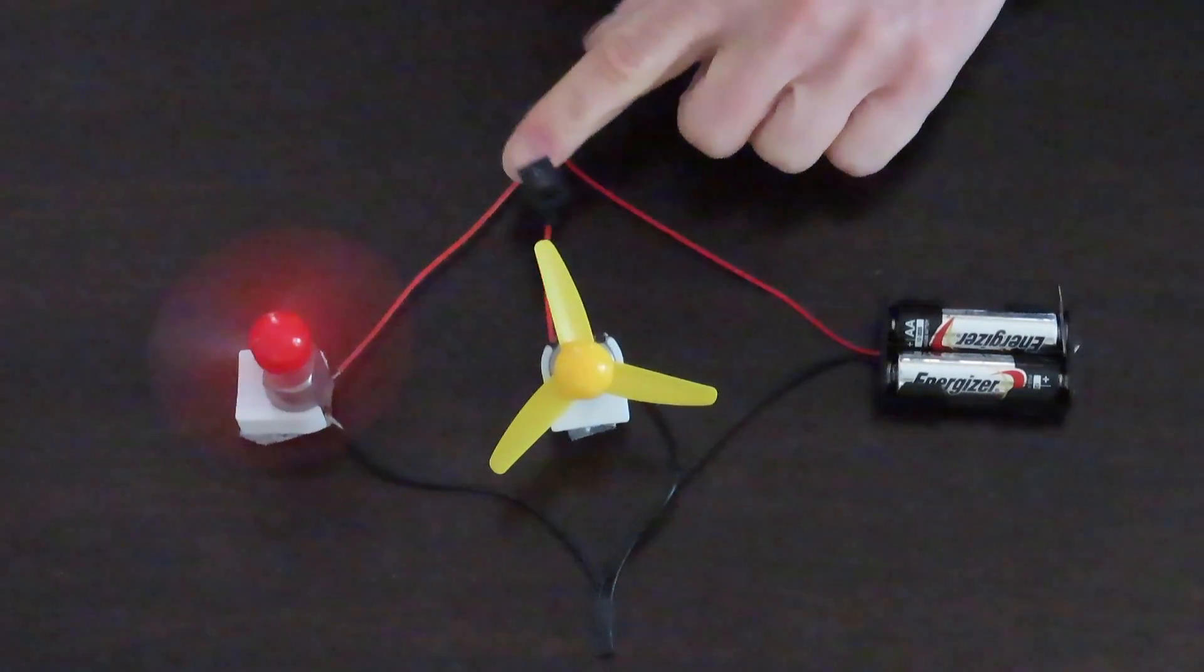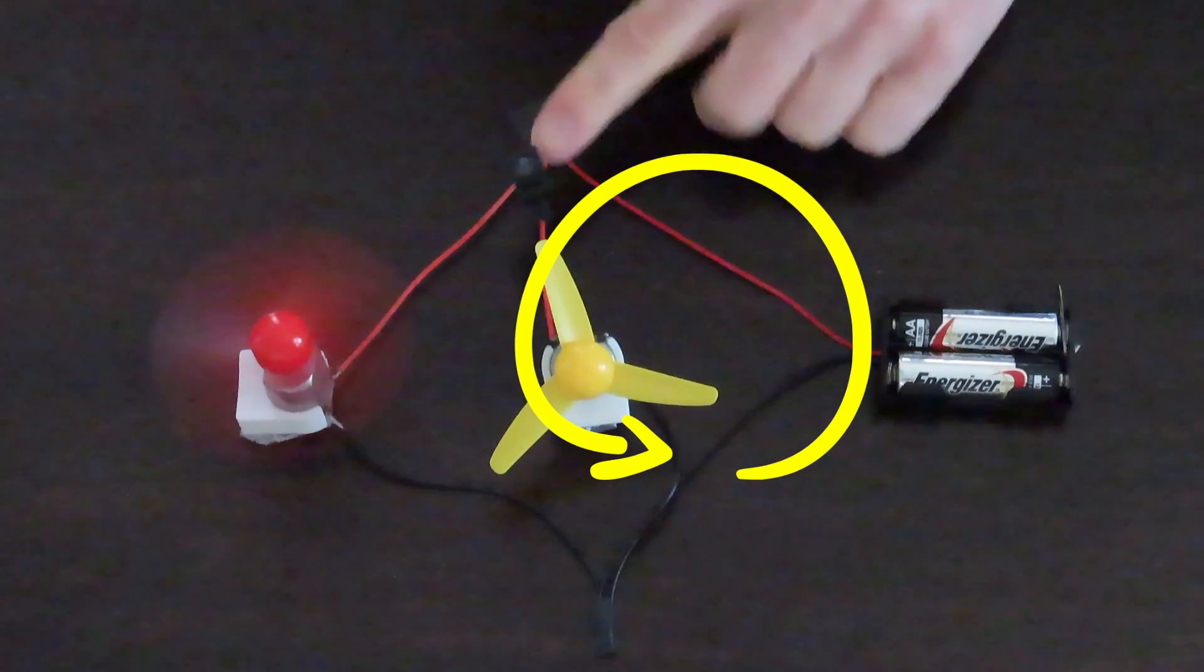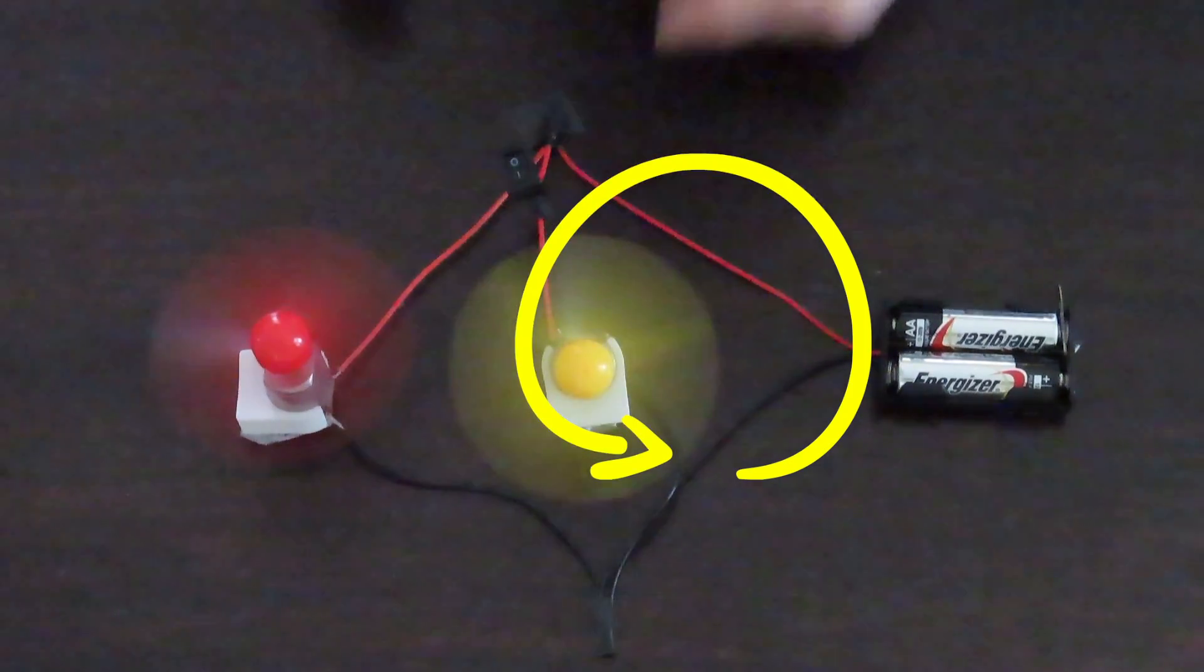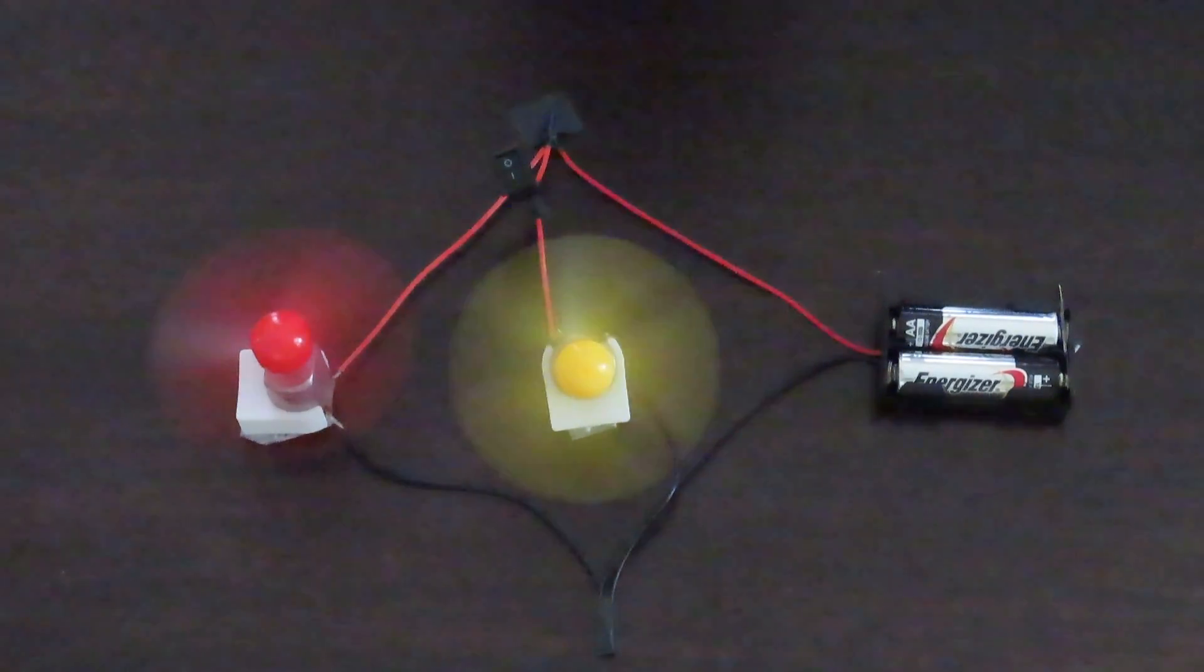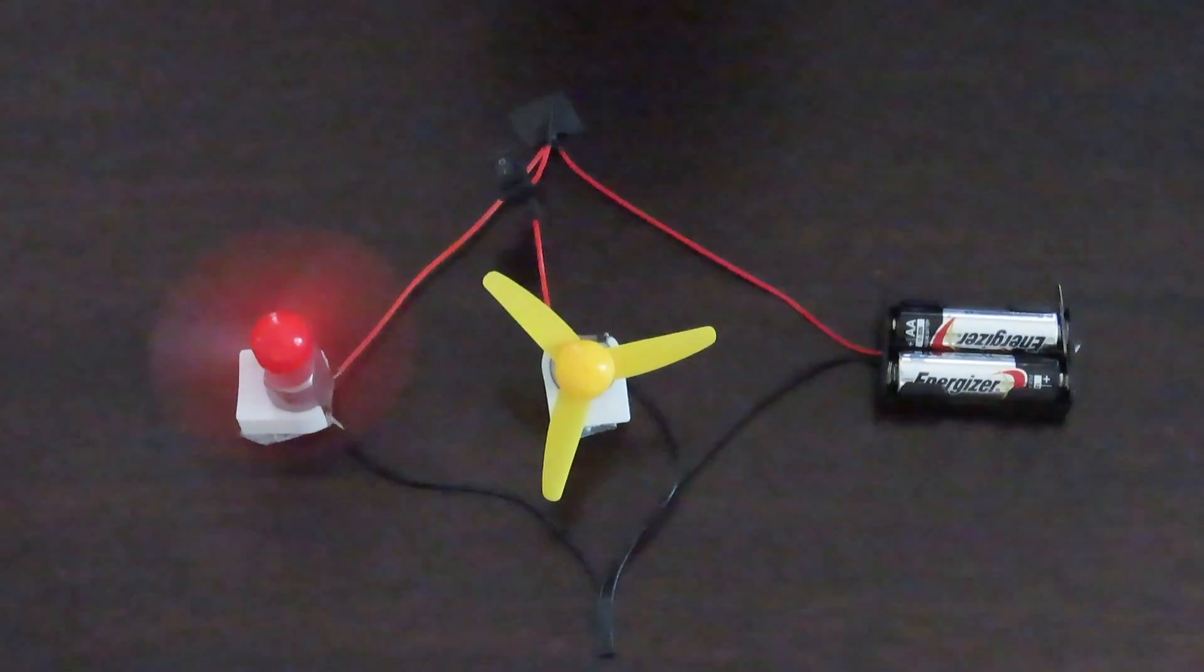If I wire the switch after the wires branch from the battery and next to the inner motor, the switch will only control that motor. The switch is not in the path of the motor on the left.